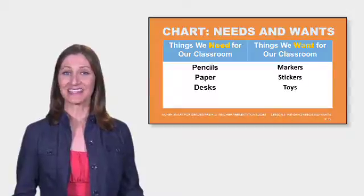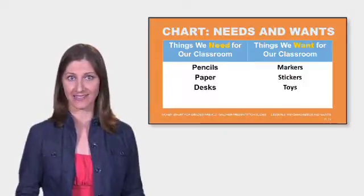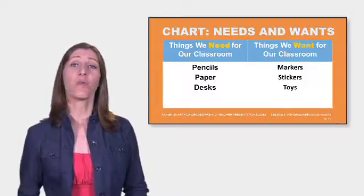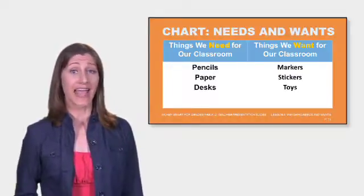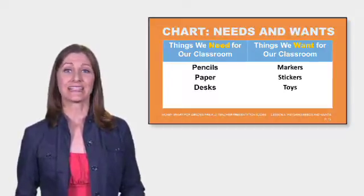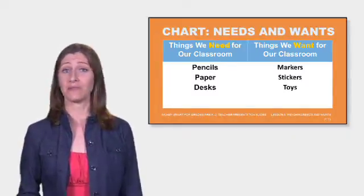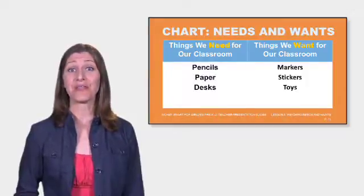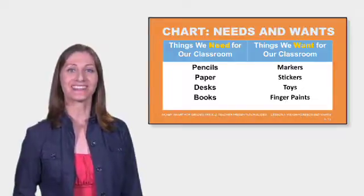Use the provided slides to create a class chart of needs and wants, or an option to using the slide would be to create a T-chart on poster or chart paper. As a class, title one side 'things we need for our classroom' — for example, pencils, paper, and desks — and title the other side 'things we want for our classroom.' Examples of the wants might be markers, stickers, and toys. As you create these two lists, share with students that a need is something we must have to successfully complete our school day, and a want is something that would be nice to have. Ask students to look around the room and see if they can spy one item that would fit into each category. Record the students' responses on the chart.